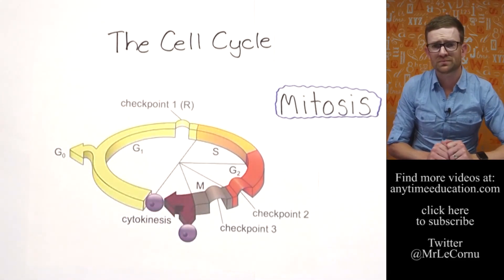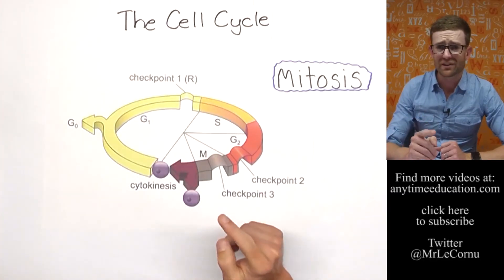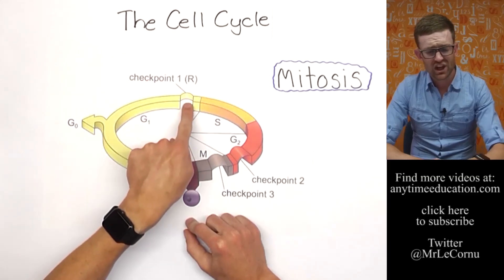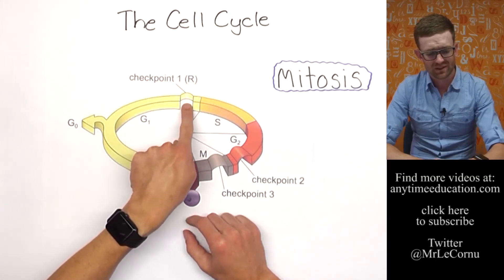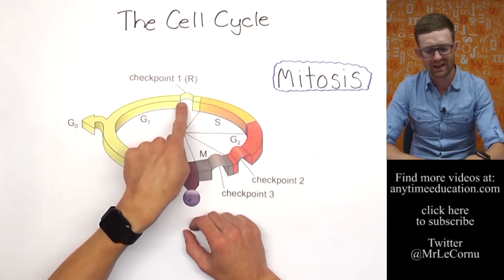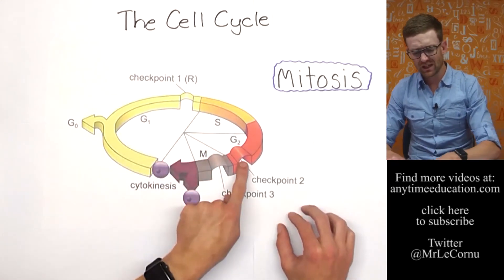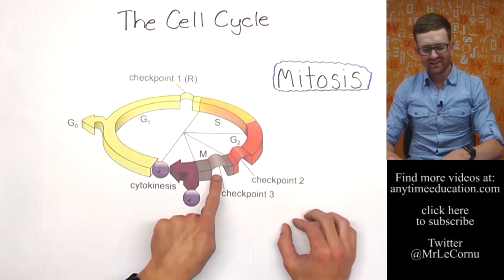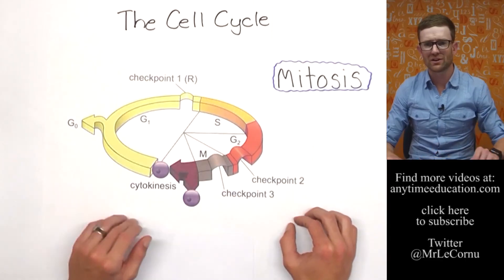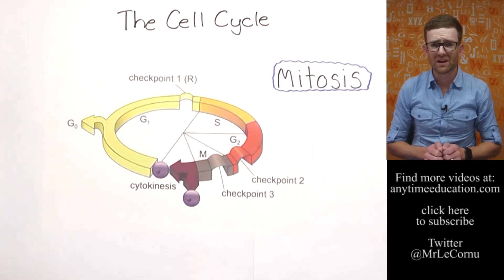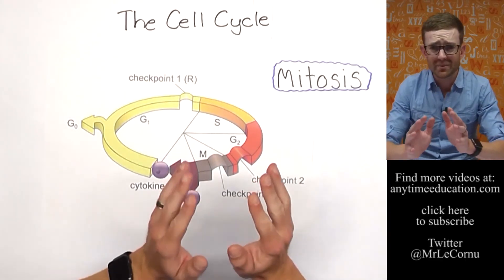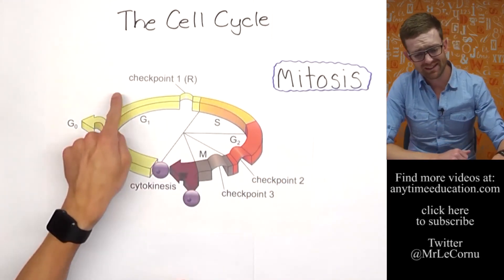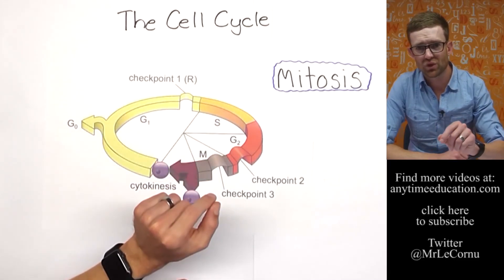It's cells like stem cells that have an active cell cycle. Now in this video, the only other thing I want to mention is that you'll see along the way here there are these checkpoints. There's checkpoint 1 that's between growth 1 and synthesis. There's checkpoint 2, which is at the end of growth 2 before mitosis. And there's checkpoint 3 during mitosis. Those checkpoints are extremely important because it is very important that the cell cycle is controlled.